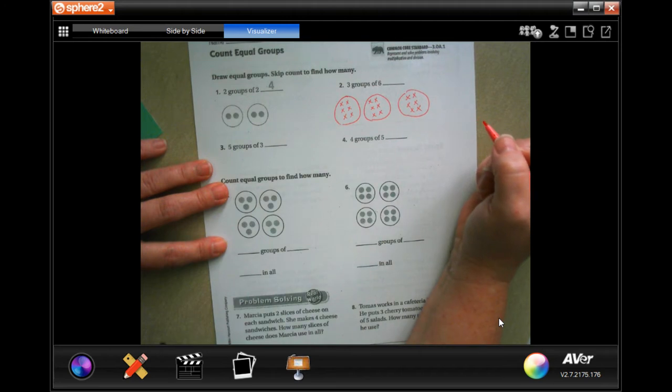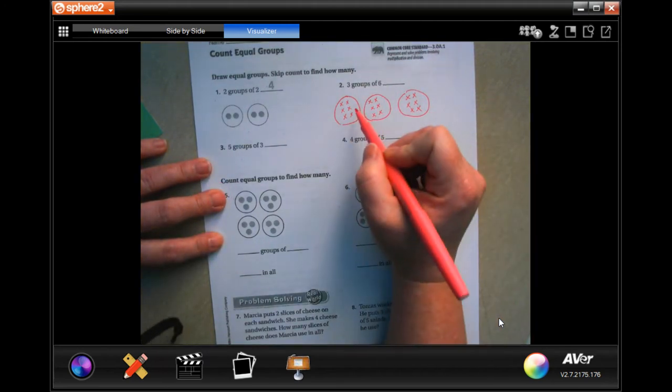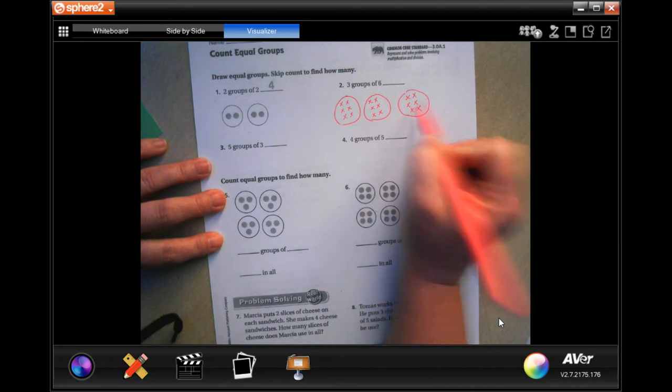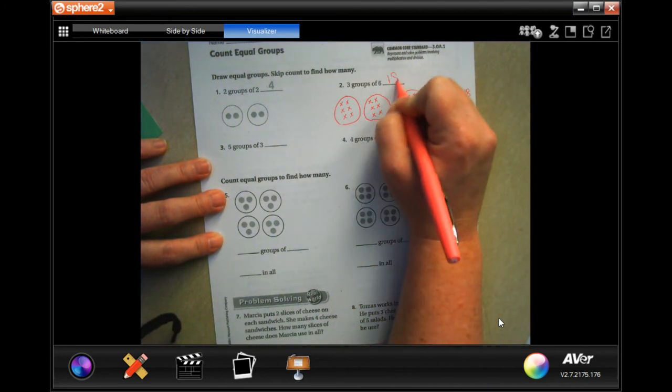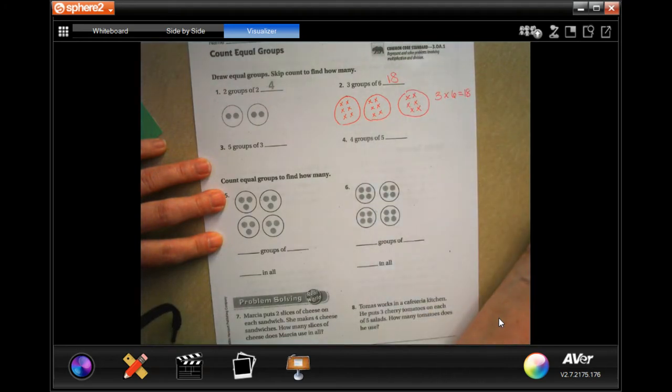Sorry, my printer's doing maintenance. Okay, so now we're going to skip count. So six, twelve, eighteen. So three times six is eighteen, which means eighteen.